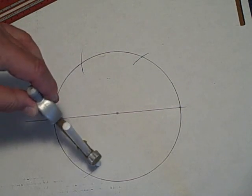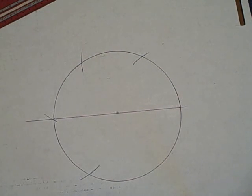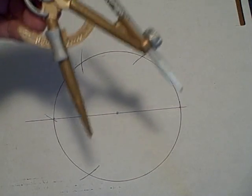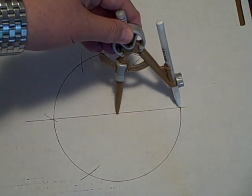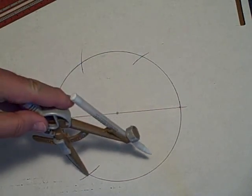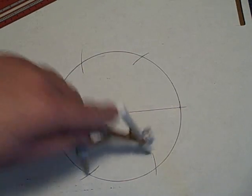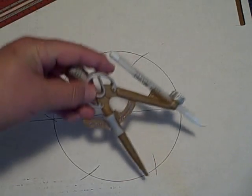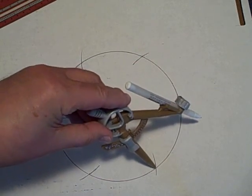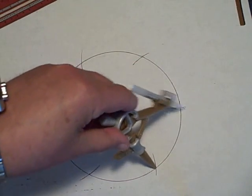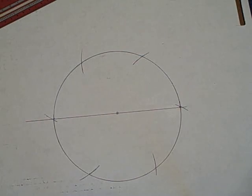Now I'm going to put the compass point there. Remember this is still set at the same radius here, the same radius that I used to draw the circle. Now I'm going to put this here and let's put the compass point right here. And look, I come right back to the starting. Isn't that interesting?